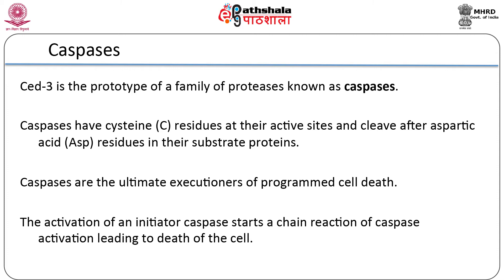The effector molecules in the apoptotic pathway are a family of enzymes called caspases, so named because they are cysteine proteases that selectively cleave proteins at sites just C-terminal to aspartate residues. These proteases have specific intracellular targets such as proteins of the nuclear lamina and cytoskeleton — cleavage of these substrates leads to the demise of a cell.